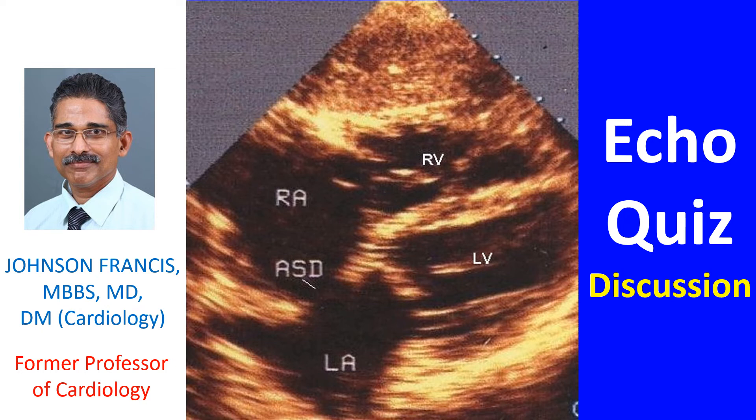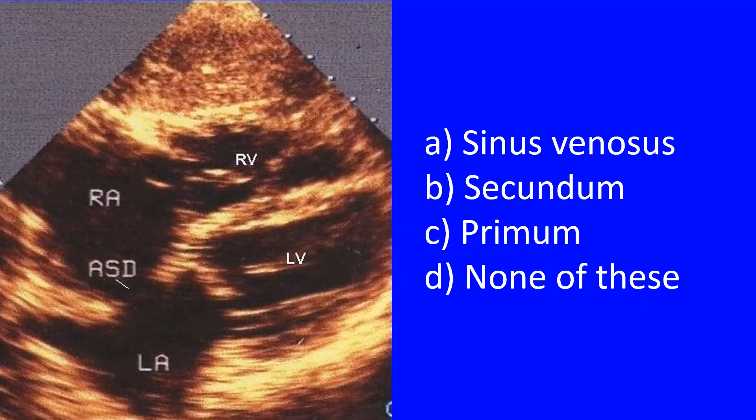What is the type of atrial septal defect seen in this echo? A. Sinus venosus. B. Secundum. C. Primum. D. None of these.